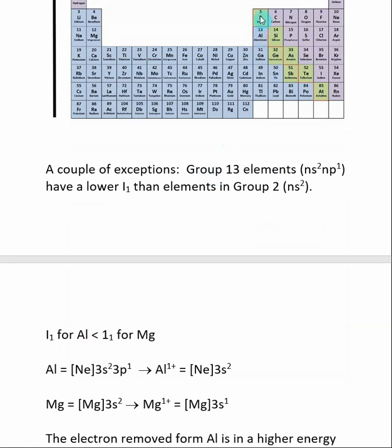They actually have a lower ionization energy than group 2 elements. We're talking about the first ionization energy. We would expect, based off the trend, that group 13 would have a higher ionization energy, and that's not true.